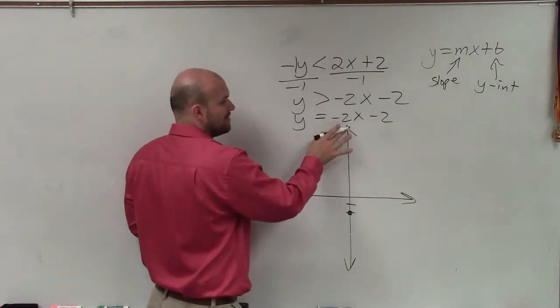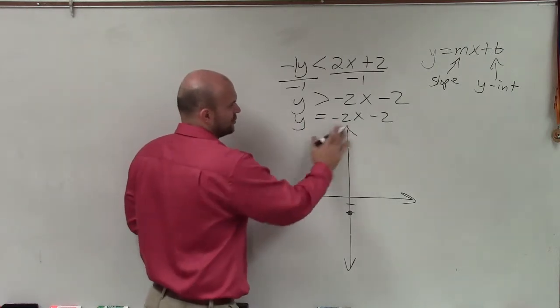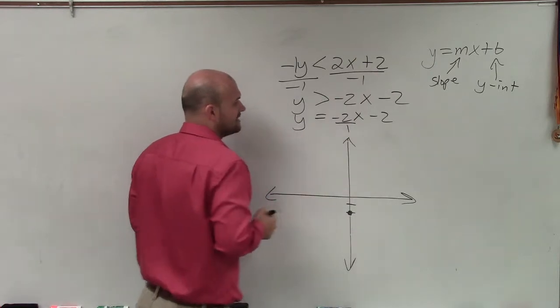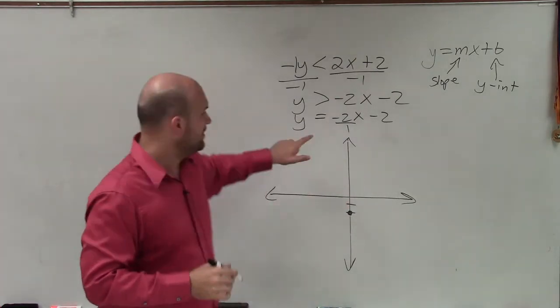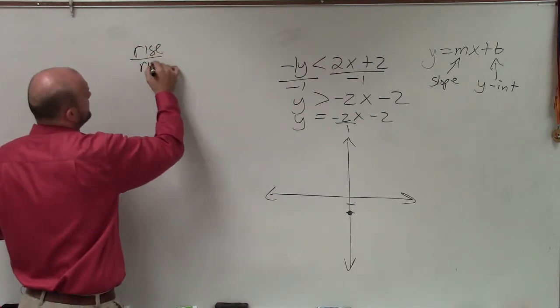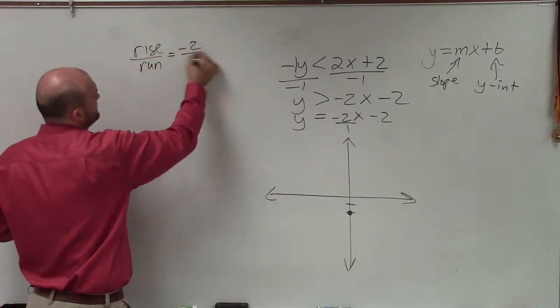Now, to follow the slope, remember when dealing with, especially when graphing slope, what we like to do is we always like to write the slope as a fraction. So I can always write a whole number as a fraction by putting it over 1. Therefore, my slope, which is rise over run, is equal to negative 2 over 1.